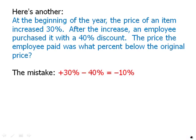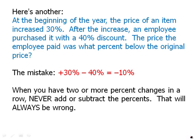The common mistake here is that people will say: up 30%, then down 40%, so 30 minus 40 is negative 10% — it must be a 10% decrease. Guaranteed, more than half, maybe even three quarters of the people who take the test will fall into this trap. It's absolutely predictable how many people make this mistake. Whenever you have two or more percent changes in a row, never add or subtract the percents. That will always be wrong.